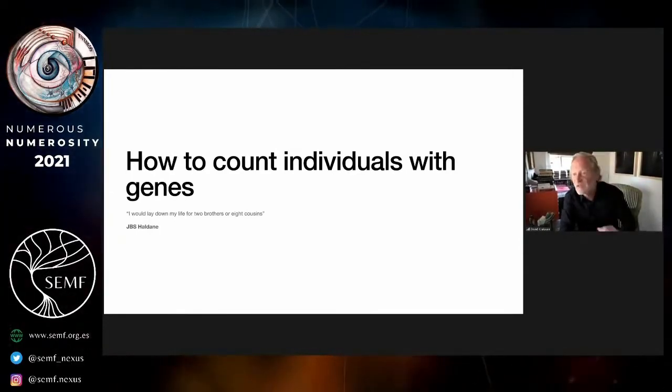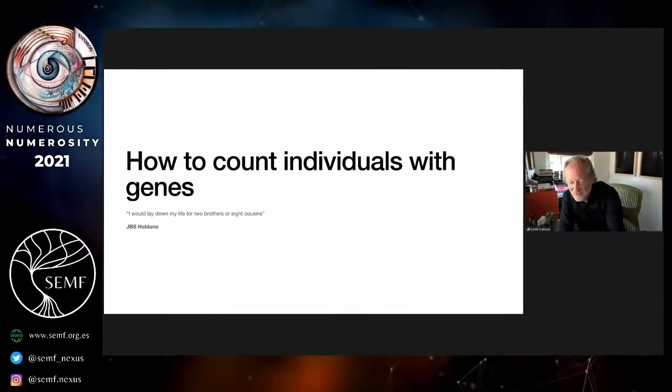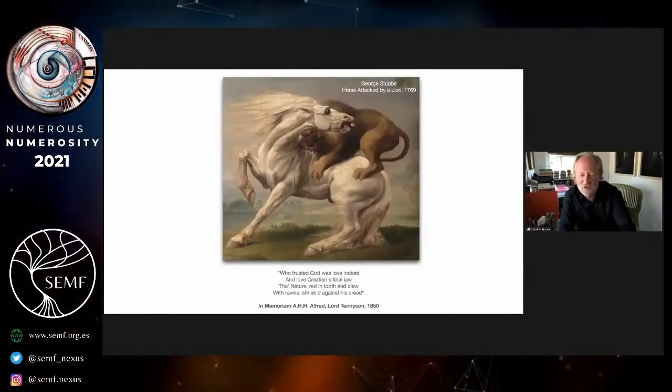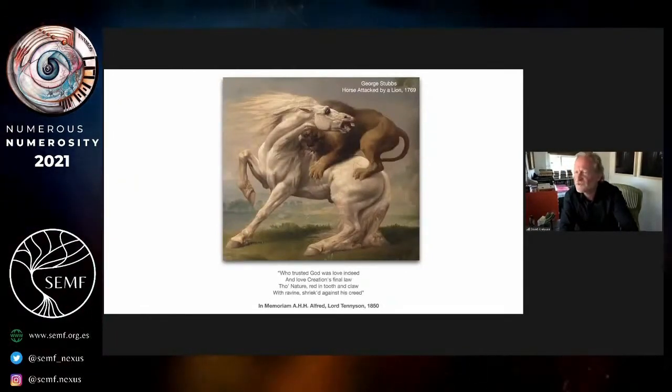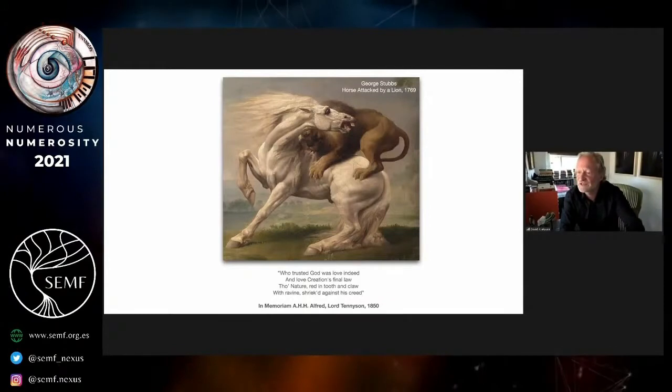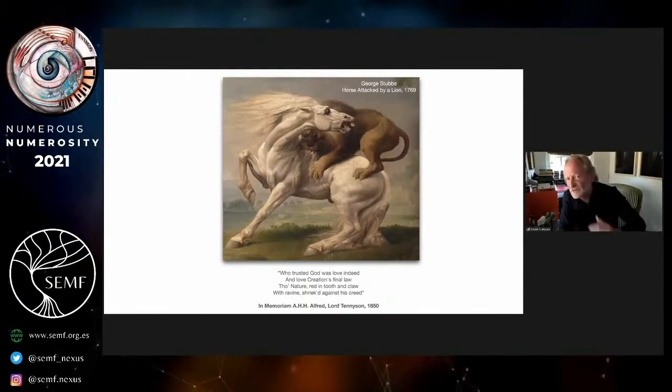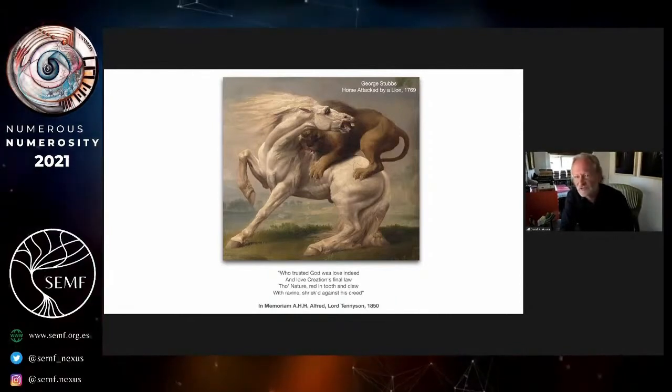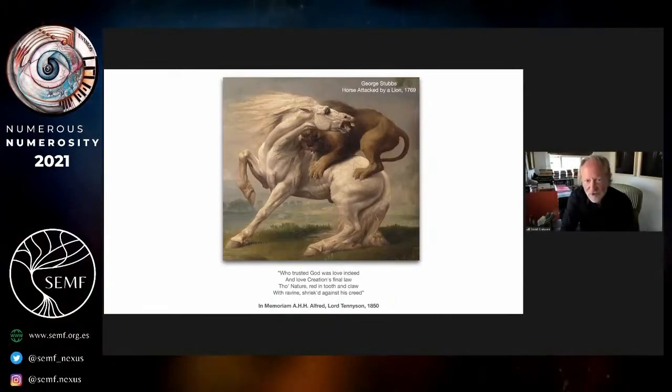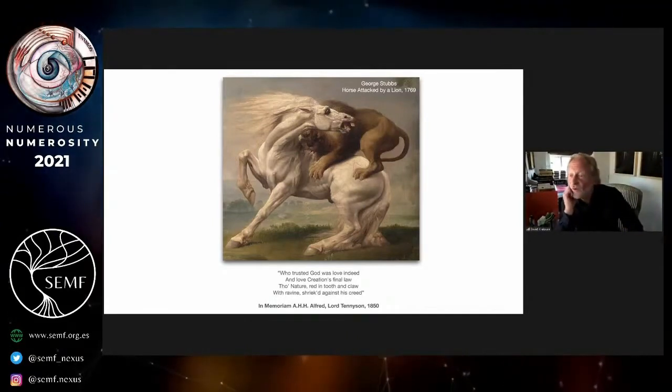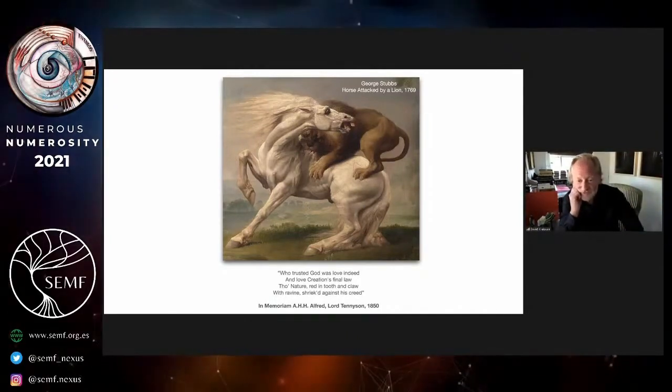Whenever you see this area discussed, you typically see this quote from Tennyson's In Memoriam that nature is red in tooth and claw - actually anti-sociality should be foundational. It's often paired with this rather violent painting by George Stubbs of a lion attacking a horse, which sort of represents in microcosm what all evolutionary biologists are dealing with.